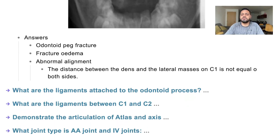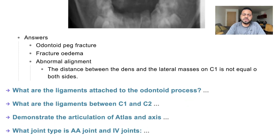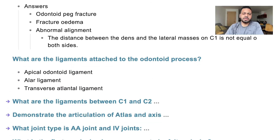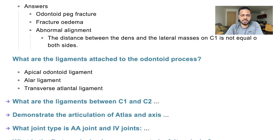The ligaments attached to the odontoid process: we have the apical ligament, the alar ligament, and the transverse ligament. The ligaments between C1 and C2 include the anterior longitudinal ligament, the posterior longitudinal ligament, and the transverse atlanto-axial ligament.